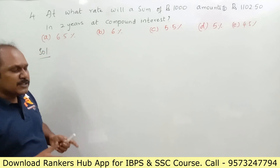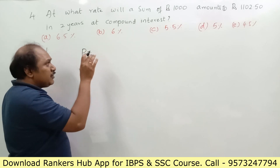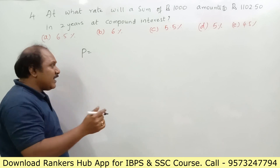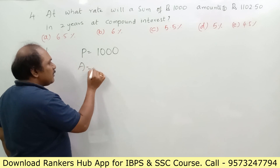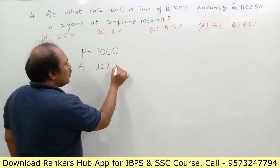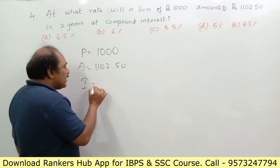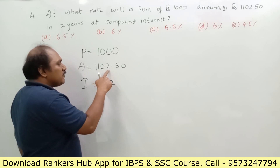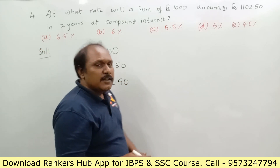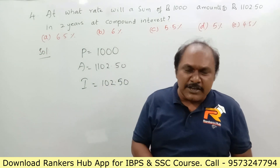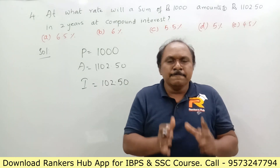The principal is 1000 rupees and the amount is 1102.50, so the interest earned over two years is 1102.50 minus 1000, which is 102.50 rupees. To answer this simply, we need to understand how compound interest is calculated without a formula — and then work through the options.